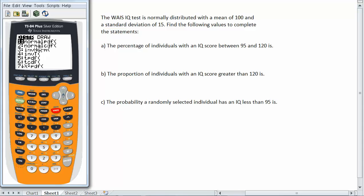And that is what's going to give us our percentage, proportion, or probability. The normal PDF command finds the height of the normal bell curve at a specific point. We want number two, normal CDF. You can either arrow down and hit enter on number two or type the number two.